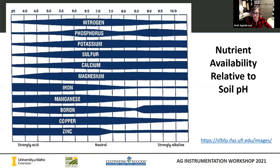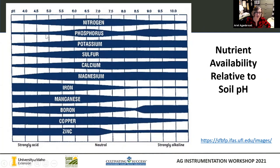This is a quick review of nutrient availability relative to soil pH. Around six and a half to seven is our sweet spot for most plants — we're seeing that the availability of our cation nutrients and other nutrients are pretty available; that blue bar is wide at that point. This is where plants are able to access what they need if it's present in the soil profile. As we go down towards more acidic soils, we see a lot of these cations become much less available, and we start to see deficiencies in phosphorus, potassium, sulfur, calcium, and magnesium.